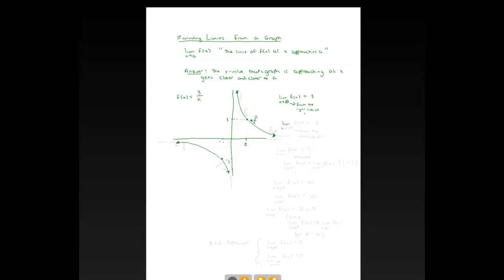Now, the limit as x goes to 1 from the left — that little minus sign means you're approaching from the left side of 1. We get on the graph a little to the left of 1 and start approaching x = 1 by walking to the right, staying on the curve. The y-value being approached is also 3.